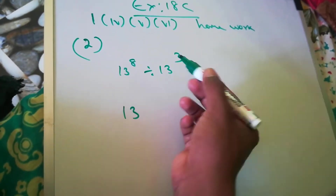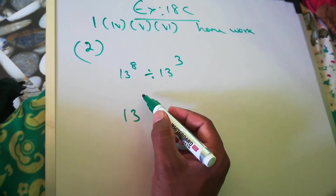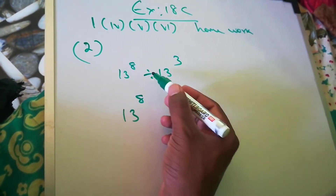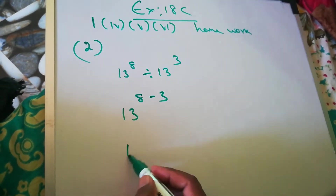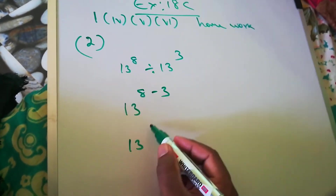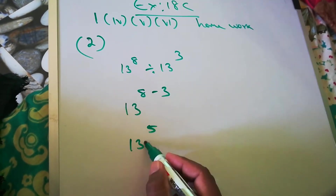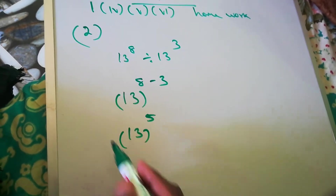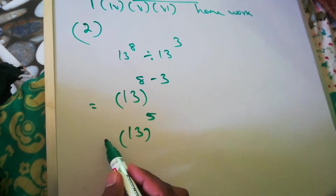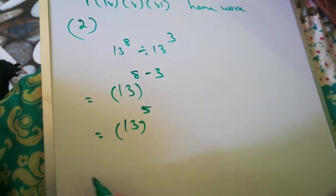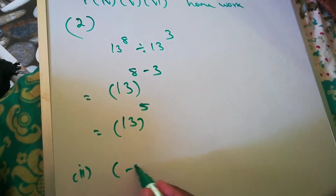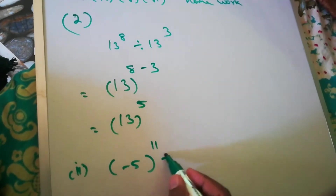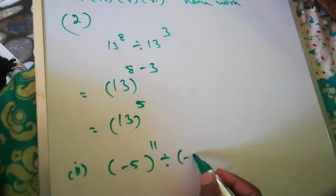Division means minus, so 13^(8−3) = 13^5. The next part of question 2: (-5)^11 divided by (-5)^... The division rule applies: subtract the powers.